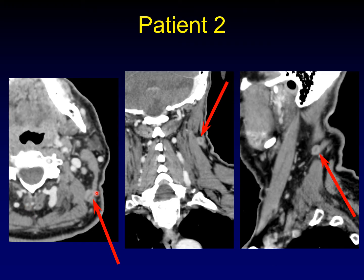Here's patient number two, and I'll give you both the coronal and sagittal reformats of that exact same node. In every single projection it looks the same — it's got a low-density center, and it's got an enhancing rim around the outside. This isn't some partial volume fooler; it really looks like that in every plane. This is a metastatic node with necrosis in the center, even though it's small.